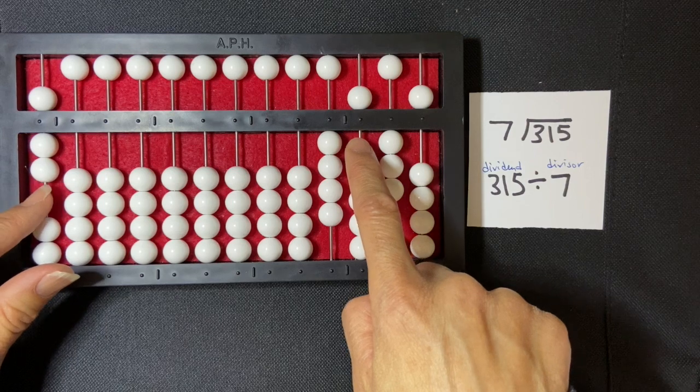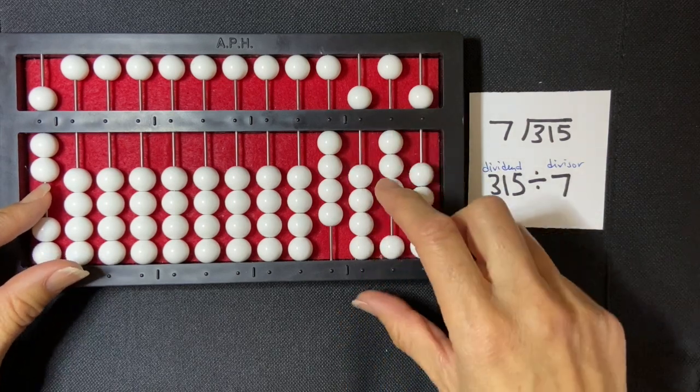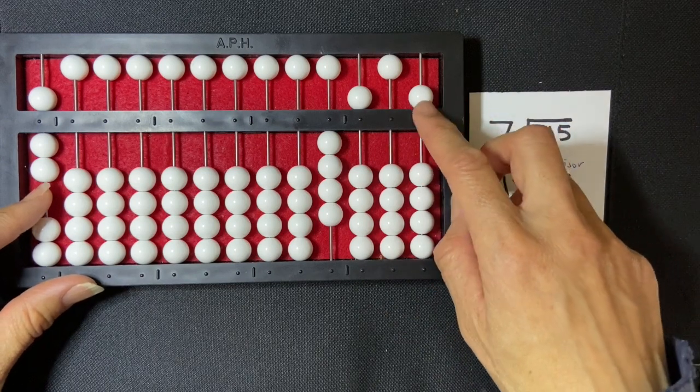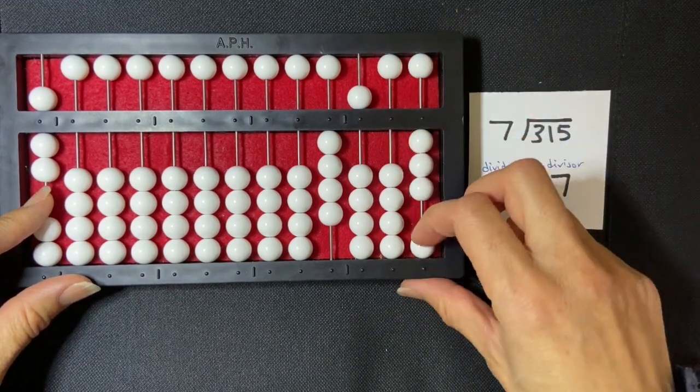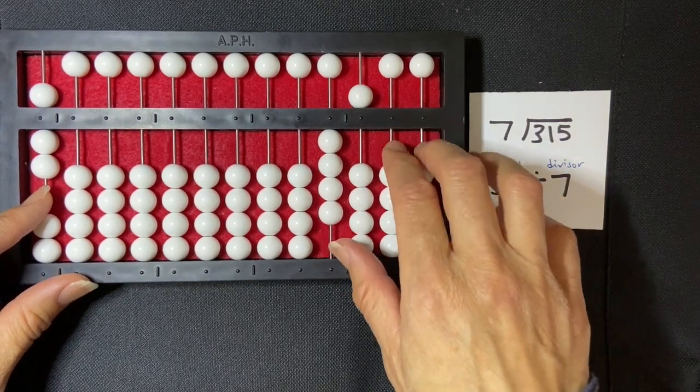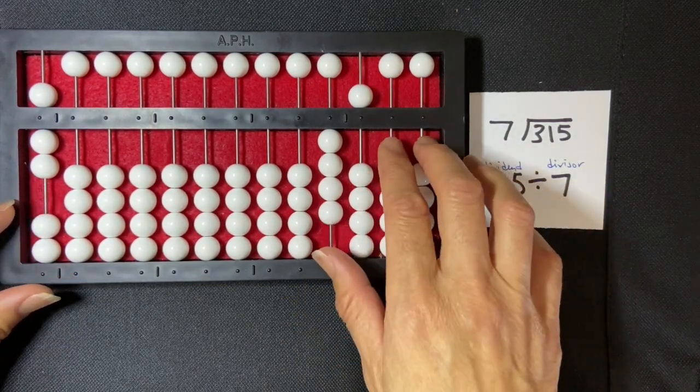And so I'm going to say five times seven is 35. So one, two, three, the 30, and then subtracting the five: one, two, three, four, five. And I get my quotient, which has no remainder. The remainder will be written here if it were on the tens and the units rod.